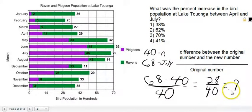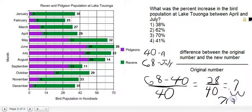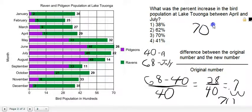So 28 divided by 40 gives us 0.7. And then, as I showed you in the last video, we simply move that decimal point over two spaces to the right and add the percent sign. So our answer is 70%.